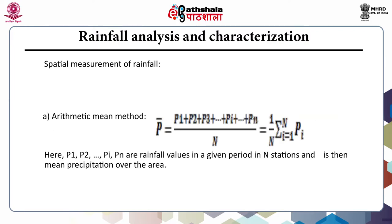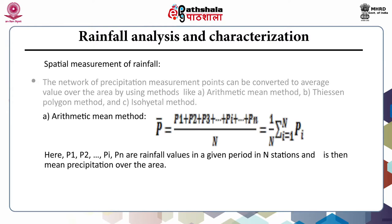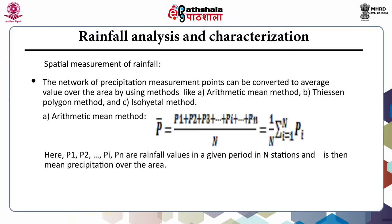For the spatial measurement of rainfall, generally we measure precipitation at a single point, which is not always representative of the amount of water falling over the entire area. As hydrological analysis requires information on precipitation over a defined area, a network of point measurements is required. The network can be converted to average values over the area by using the arithmetic mean method, Thiessen polygon method, or isohyetal method.